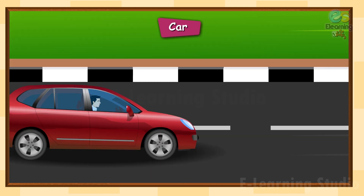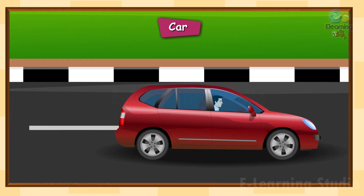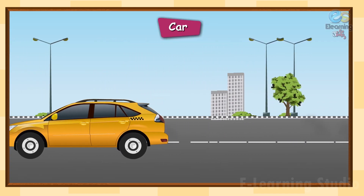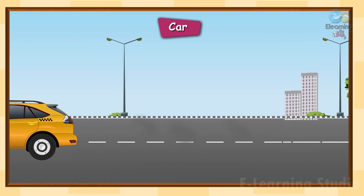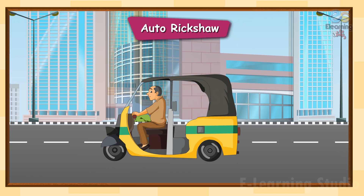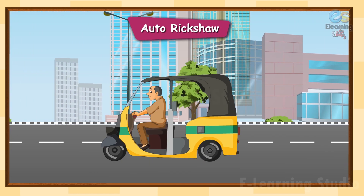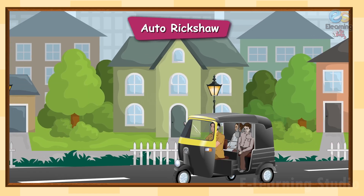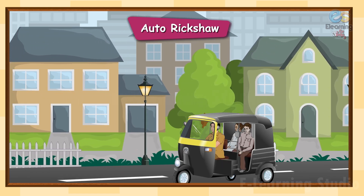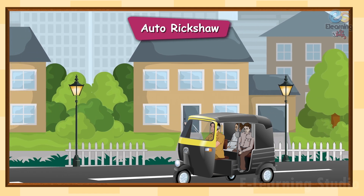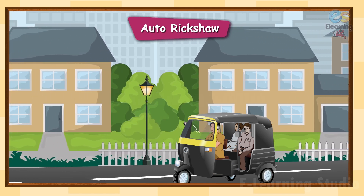Car: this is a car. A car is also a land transport with four wheels. It can carry two to four people at a time. Auto rickshaw: an auto rickshaw has three wheels. It carries passengers from one place to another for short distances.